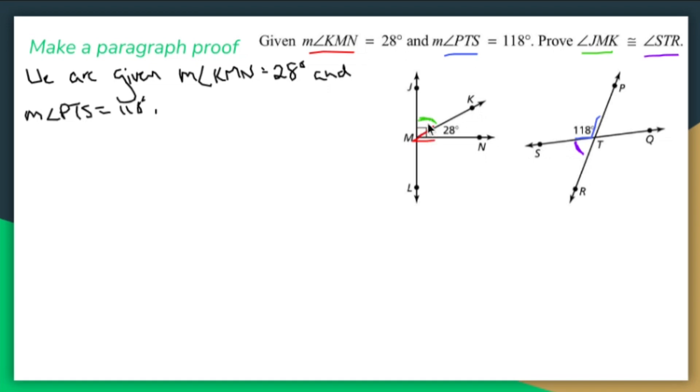Now what I know is I see that right angle right there. So what I can say is that angle JMK and angle KMN add up to 90 degrees by the definition of right.